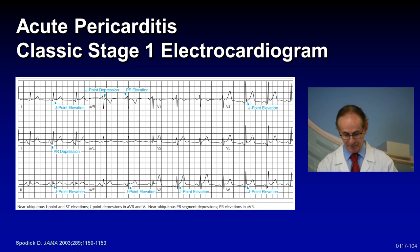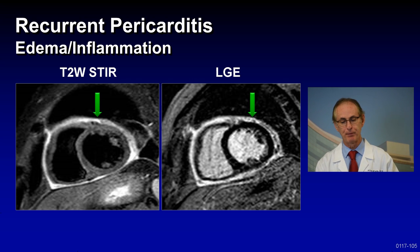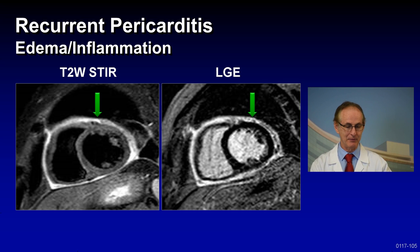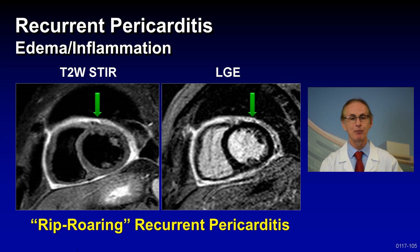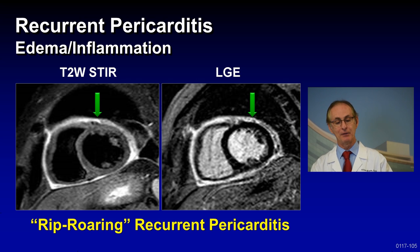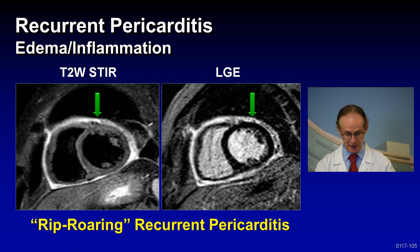But now we've come a long way with advanced imaging. This is a case of complicated pericarditis — so-called recurrent pericarditis — where on the left you can see edema. The white around the heart suggests inflammation on the right and edema on the left. This patient has rip-roaring recurrent pericarditis, and based on the advanced imaging, this patient would take two to three years of anti-inflammatories to treat. So now we can prognosticate how long to treat these patients.